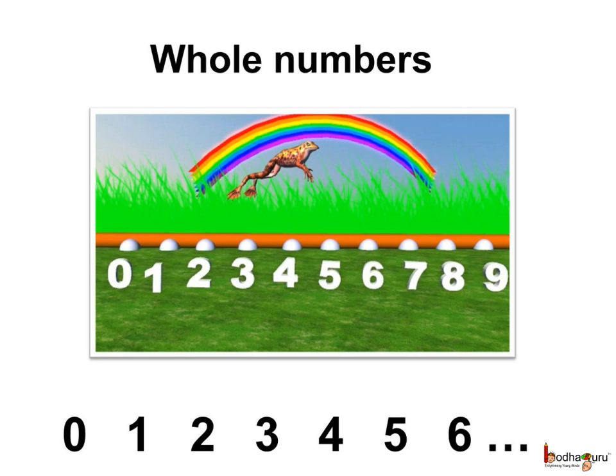When we include zero with the natural or the counting numbers, they are called whole numbers. There is no fractional or decimal part here and no negative numbers.